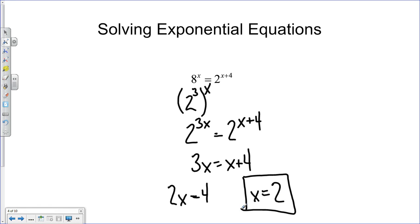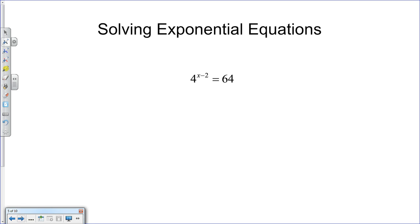Now obviously we're not going to always be able to make the base number the same on each side. So let's take a look where maybe we won't be able to do it. But first, I believe we can actually turn this 64 into a 4. Let's see, 4 squared is 16 multiplied by 4 again, so yeah, I can turn the 64 into 4 cubed. Again, since I have the same base number, I set the 2 powers equal to each other and I can solve for x. x equals 5.